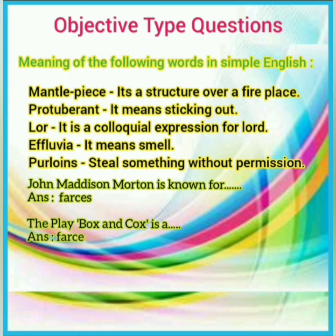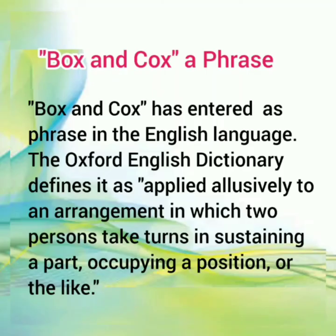Now, our next question is: John Madison Morton is known for — the answer is farces. The play Box and Cox is a — the answer is farce — a comedy full of humor with cheap or exaggerated dialogues. Dear students, I tell you for your information: Box and Cox has entered a phrase in the English language. The Oxford English Dictionary defines it as applied to an arrangement in which two persons take turns in sustaining a part, occupying a position, or the like.